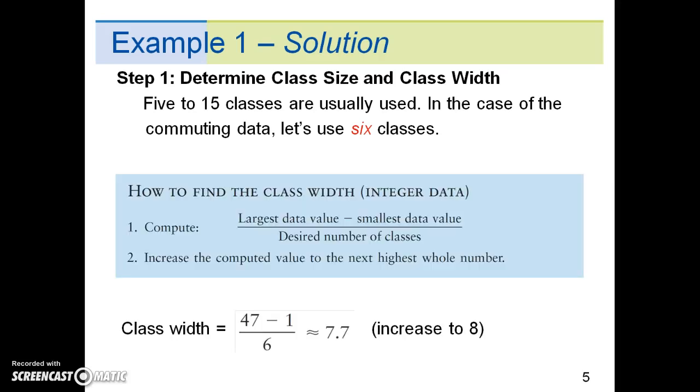To calculate the class width for the commuting data, we follow the given formula. According to the data on the previous slide, the largest distance commuted is 47 miles and the smallest is one mile. Using six classes and plugging all the information into the formula, we get 7.7.